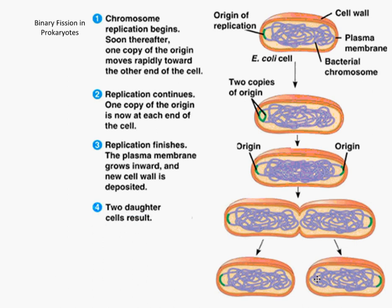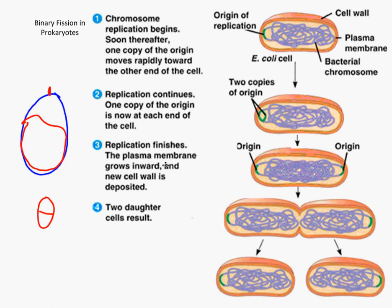One thing particular to binary fission in prokaryotes is theta replication. Prokaryotes have a single circular chromosome, and when that DNA begins to replicate, there is a point of origin and replication proceeds from both ends. Eventually, the new piece of DNA resembles the Greek letter theta. They call it theta replication because of that resemblance, and if you were to turn this on its head you would see the theta shape more clearly. Theta replication specifically refers to prokaryotic cell division.